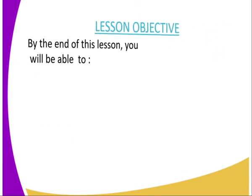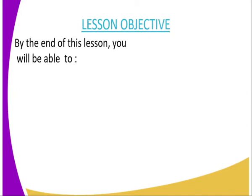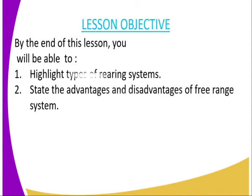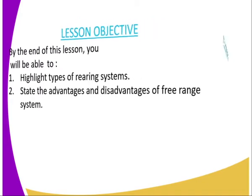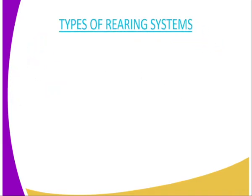On to the lesson objectives. By the end of this lesson, you should be able to: number one, highlight the types of rearing system, and number two, state the advantages and disadvantages of free range system.